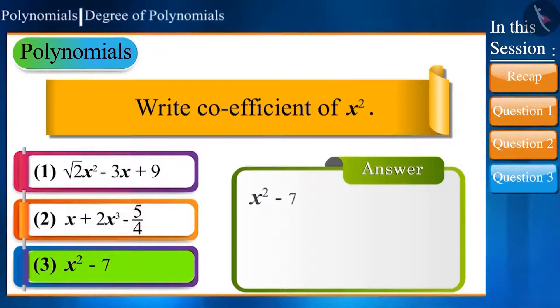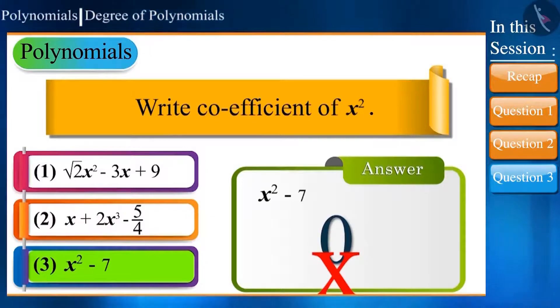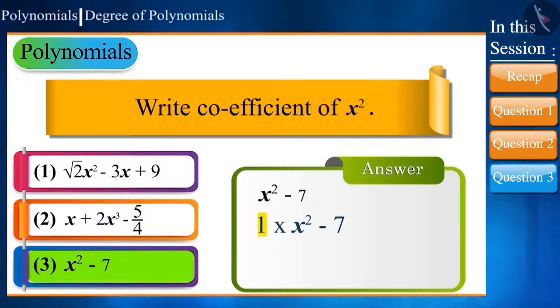The next polynomial is x square minus 7. Will the answer be 0 in this case also? No. If x to the power of 2 has no coefficient, its coefficient is taken as 1, because on multiplying any term with 1, we get the same term.